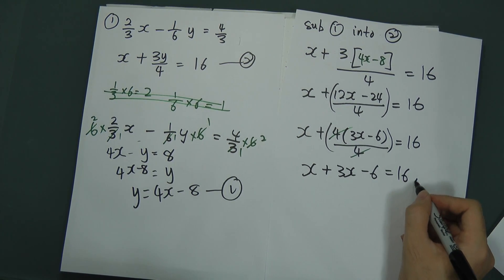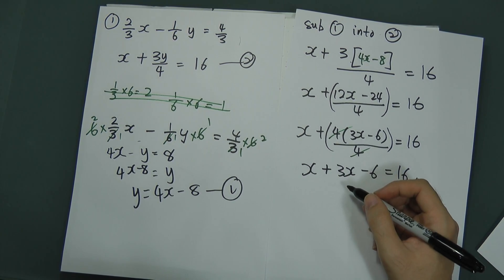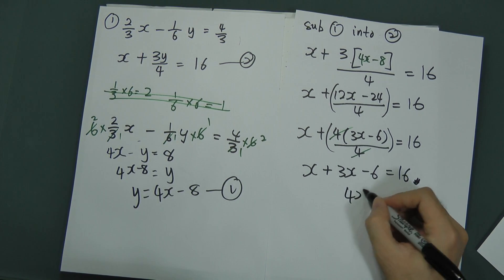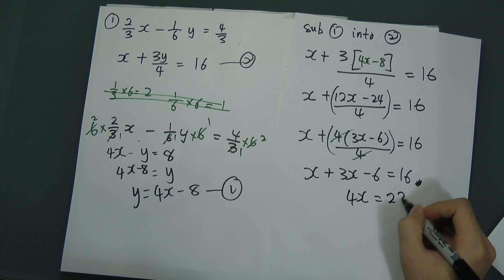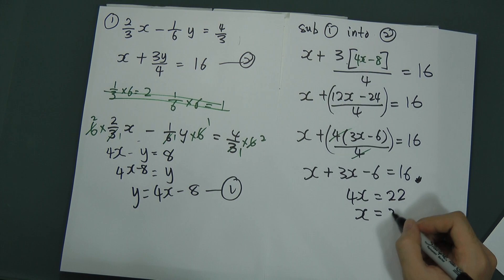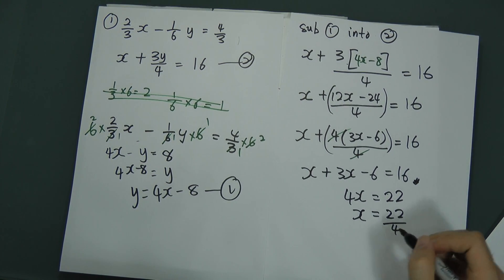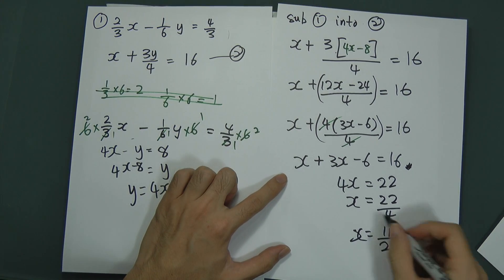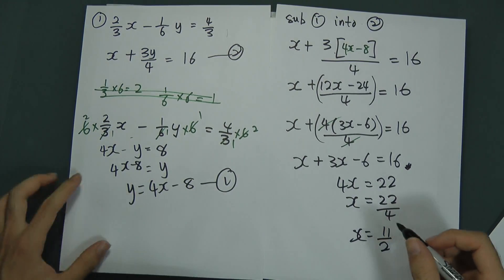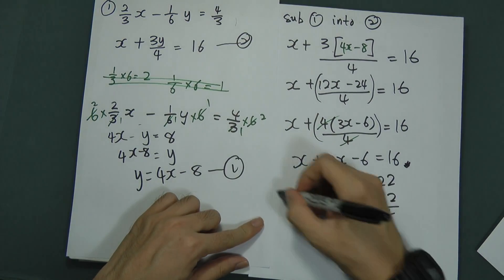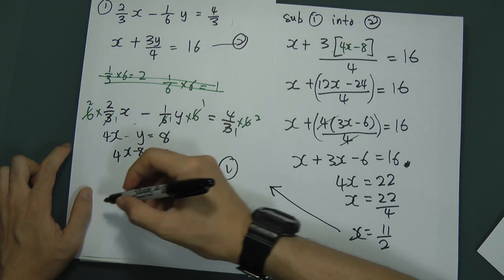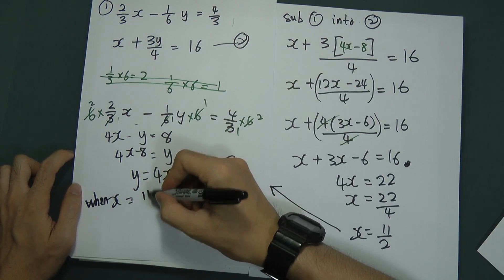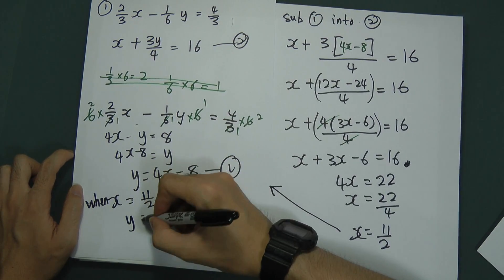Collecting the x terms: 4x minus 6 equals 16. Moving minus 6 to the other side: 4x equals 22. Therefore x equals 22 over 4, which simplifies to 11 over 2. After that, substitute x = 11/2 back into equation 1 to find y. When x equals 11 over 2, y equals 4 times 11 over 2 minus 8.